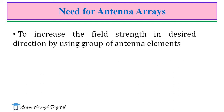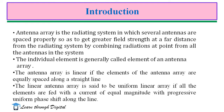That means it is desired to have greater directivity in a desired direction, which is not possible with a single dipole element. Hence, to increase the field strength in the desired direction, a group of antennas are excited simultaneously. Such a group of antennas is called an array of antennas, or simply an antenna array. An antenna array can be defined as a system of similar antennas directed to achieve the required high directivity in the desired direction. In general, an antenna array is a radiating system in which several antennas are spaced properly so as to get greater field strength at a far distance by combining radiations from all the elements in the system.